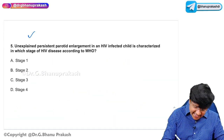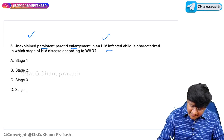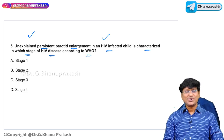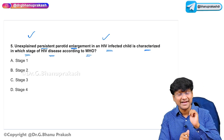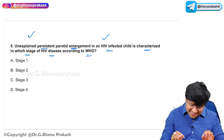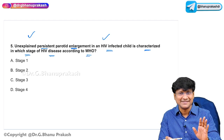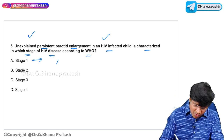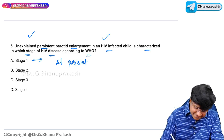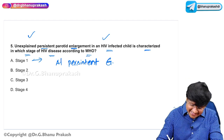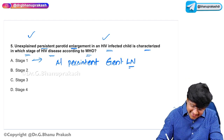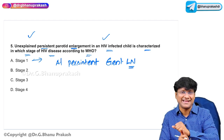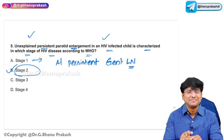Fifth question: unexplained persistent parotid enlargement in an HIV-infected child is characterized under which WHO stage? There are four WHO stages. Stage 1: patients are asymptomatic or have persistent generalized lymphadenopathy. Persistent parotid gland enlargement comes under Stage 2.